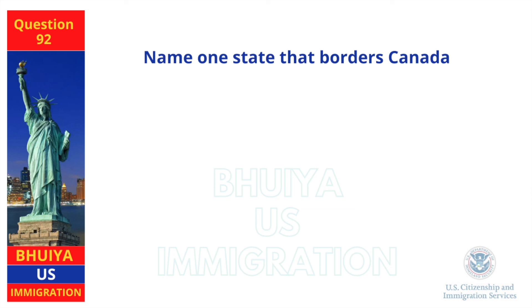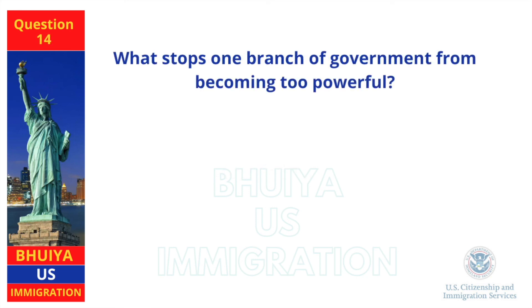Name one state that borders Canada. New York. What stops one branch of government from becoming too powerful? Checks and balances.